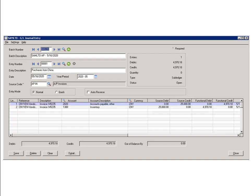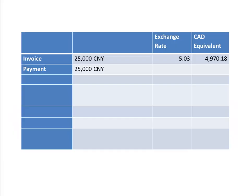Now, let's look at the payment. On the day that the payment is made, 1 Canadian dollar is equivalent to 5.08 yuan. This means that on this day, the value of our payable is 4,921.26 Canadian dollars. Looking back at the original valuation of the invoice, we can see that the value of our payable has decreased.